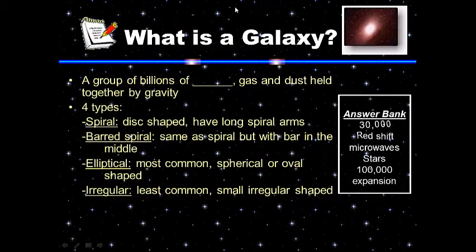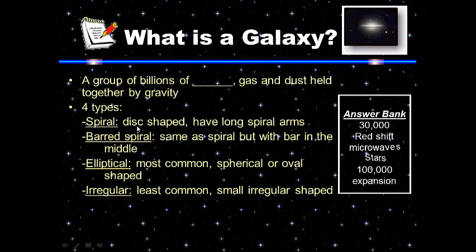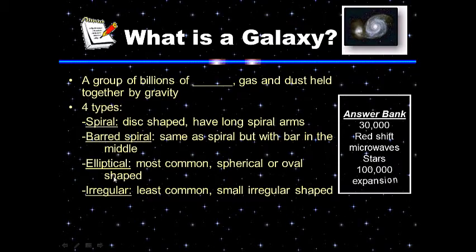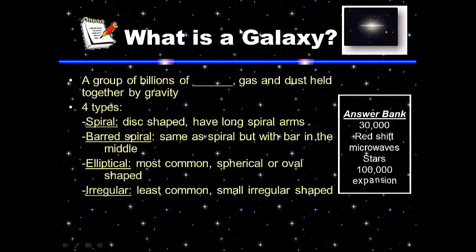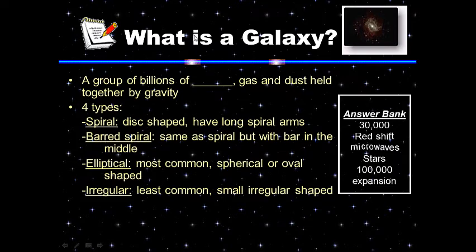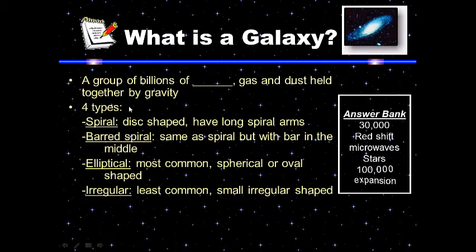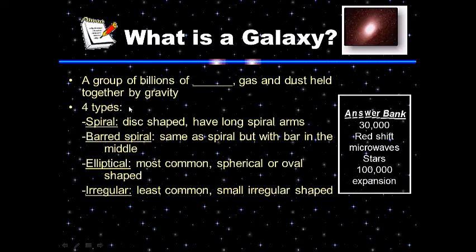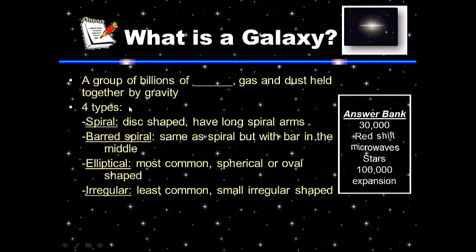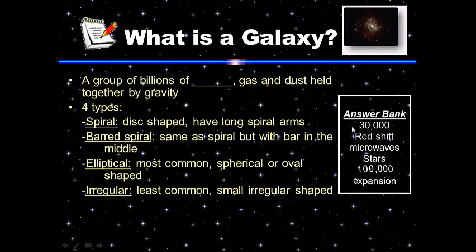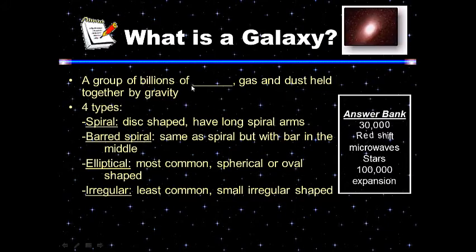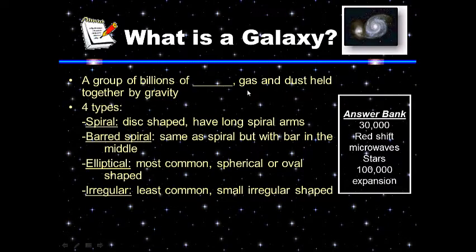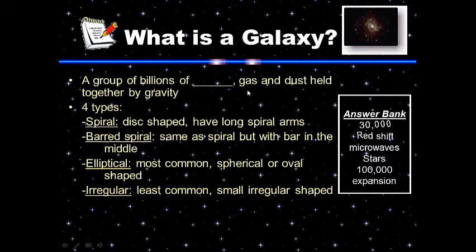Okay, so what is a galaxy? Be sure to list the four types. The question goes in your question section; everything under the question goes in your answer section. Please read the passage and use the answer bank to determine which word best completes each sentence. Go ahead and pause this while you write.